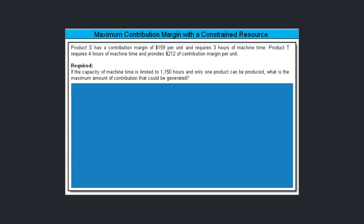What we're asked to do is shown in the required part below. It tells us that if the capacity of machine time is limited to 1,150 hours and only one product can be produced, what is the maximum amount of contribution margin that could be generated?